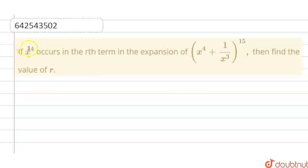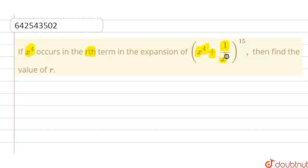The question is: if x raised to the power 4 occurs in the rth term in the expansion of x raised to the power 4 plus 1 by x raised to the power 3, whole raised to the power 15, then we have to find the value of r.